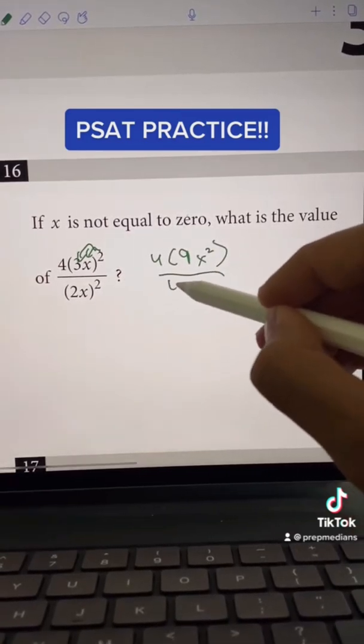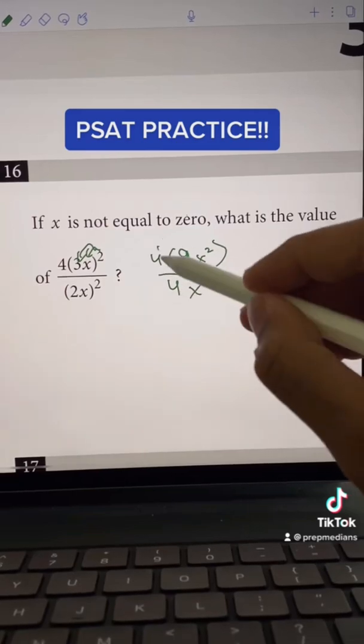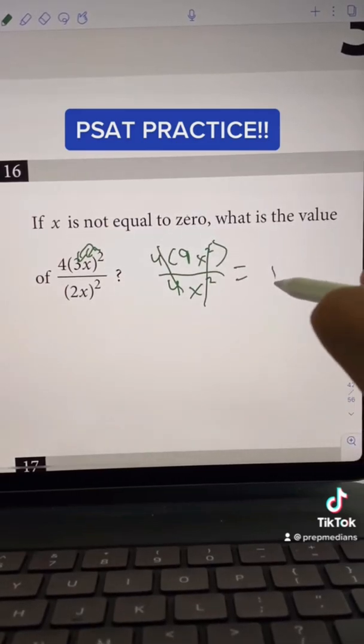All over the denominator, which is 2 squared, which is 4, times x squared, which is x squared. We bada bing and bada boom, and we're left with our answer, which is 9.